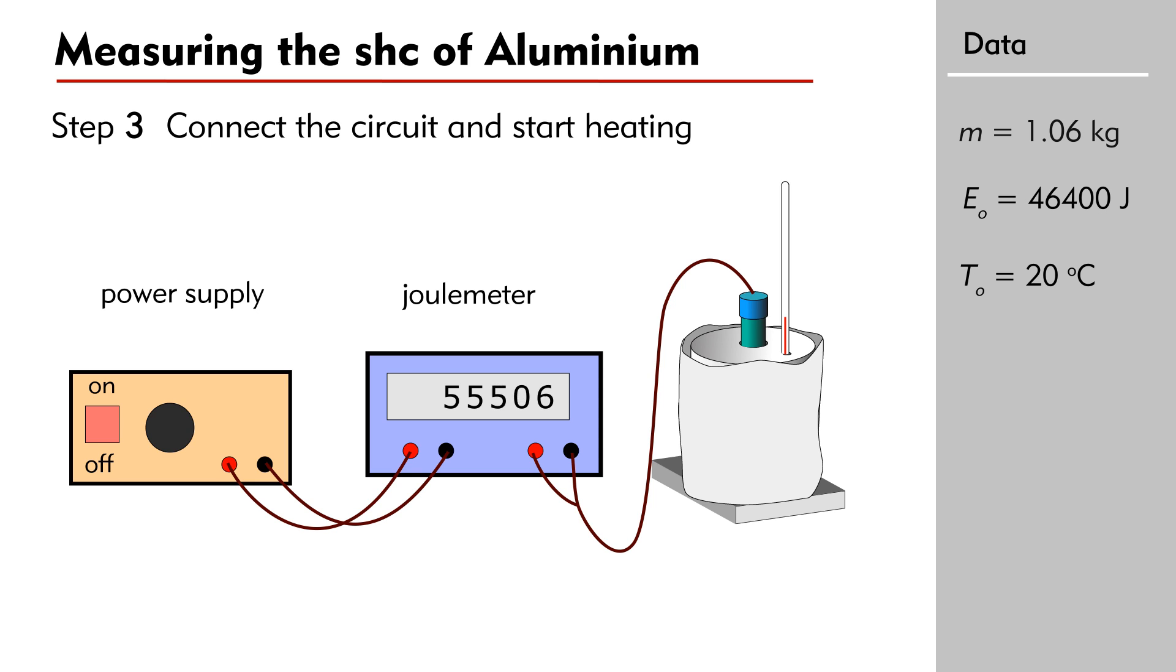When the temperature has risen by about 10 degrees Celsius, turn off the power supply. We have to wait until the heat distributes uniformly over the metal block. This occurs when the temperature reaches the maximum value. Record the final joulemeter reading E₁ and the highest temperature T₁.